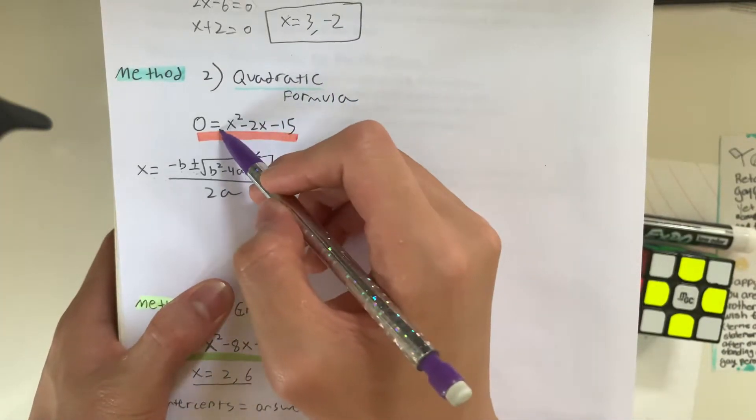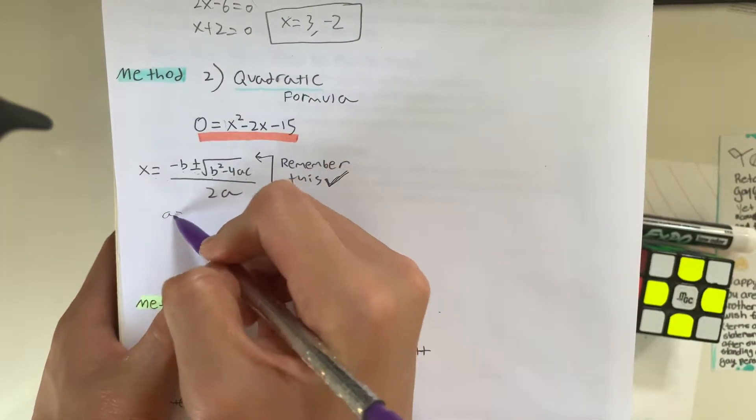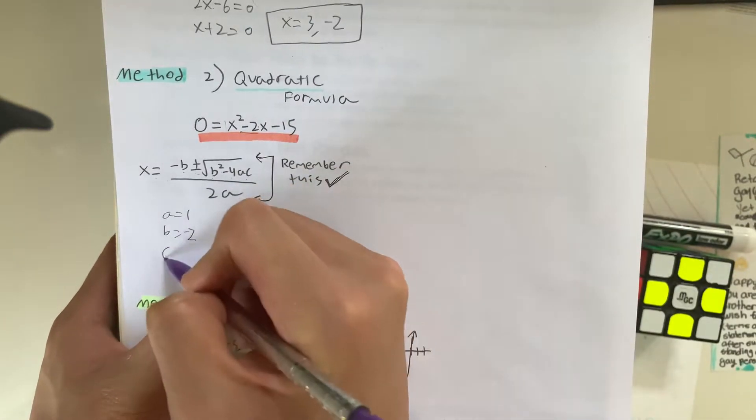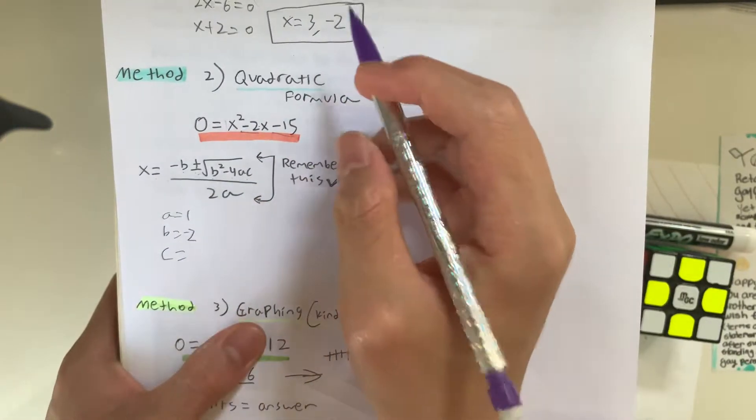Where a, in this case, is equal to 1, b is equal to negative 2, and c is equal to negative 15.